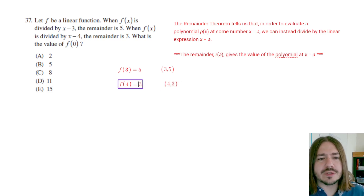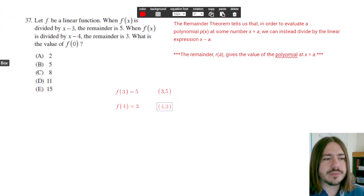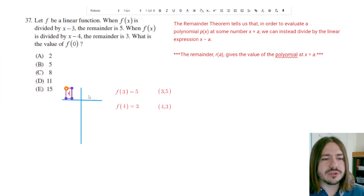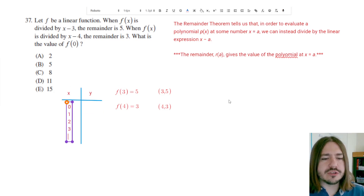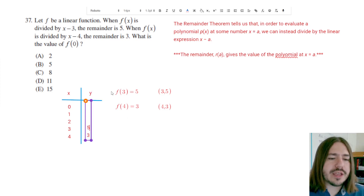Now, in the beginning of the problem it said this was a linear function, so we know this function has a constant rate of change. We can set up a table here and work backwards to get to f of 0. You could alternatively come up with an equation using these two points, but since these numbers are so close together, it's probably just easier to construct a table and work backwards. What we're interested in is the value of f of 0 — in other words, the y coordinate when x is 0. I know that when x is 3, y is 5, and when x is 4, y is 3. Working the table, the rate of change is minus 2.